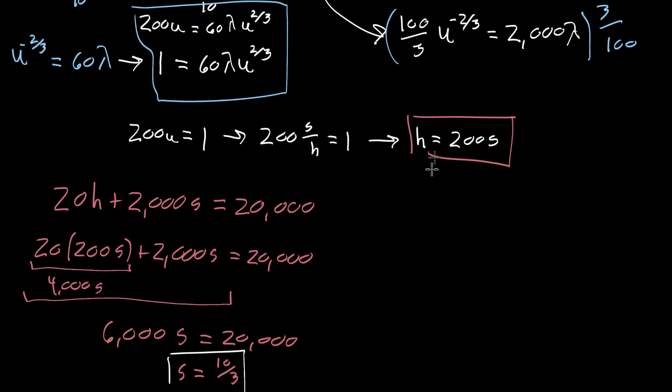So that's how many tons of steel we should get. S is 10 over 3. Then when we apply that to the fact that H is 200 times S, that's gonna mean that H is equal to 200 times that value, 10 over 3, which is equal to 2,000, 2,000 thirds, 2,000 thirds. That's how many hours of labor we want.